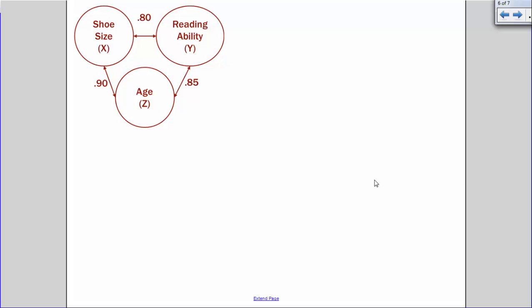In this example, you see there's a strong positive relationship between shoe size and reading ability. That doesn't make a whole lot of sense. It's really strong and positive, like maybe people with bigger feet have better reading ability and people with smaller feet can't read as well.